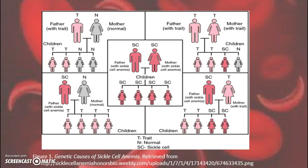If one parent has sickle cell anemia, the child will inherit the trait. If one parent has sickle cell anemia and the other parent has a trait, there is a 50% chance the child will inherit the trait and a 50% chance the child will inherit sickle cell anemia. Lastly, if both parents have sickle cell anemia, there is a 100% chance the child will inherit the disease as well.